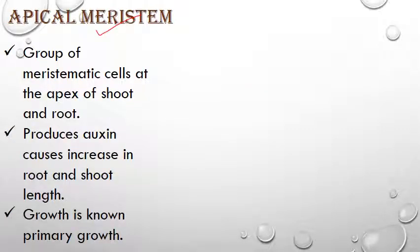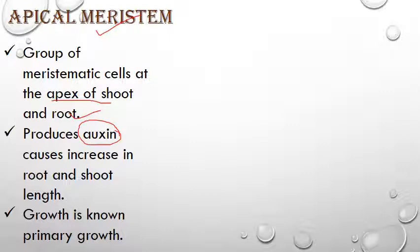Apical meristem, as the name indicates, is present at the apex of root and shoot. Meristematic tissues are a group of meristematic cells present at the apex of shoot and root. The main function of apical meristem is to give rise to the apical parts of the plant. It also produces a growth hormone called auxin, which we will discuss in plant physiology. Auxin helps in increasing root and shoot length, so its main function is in growth.